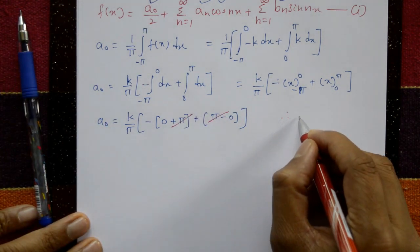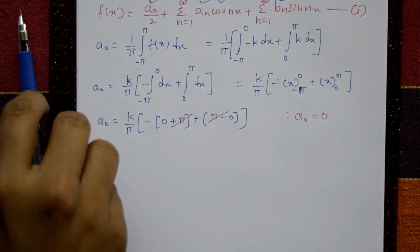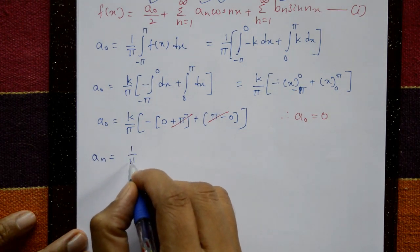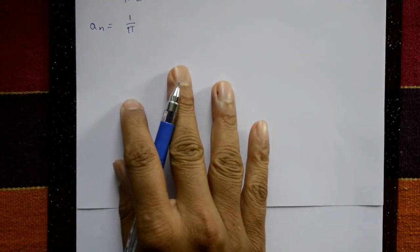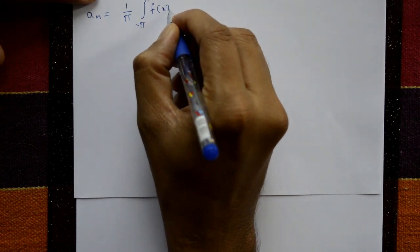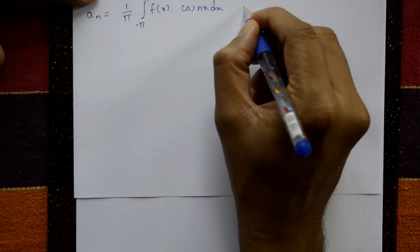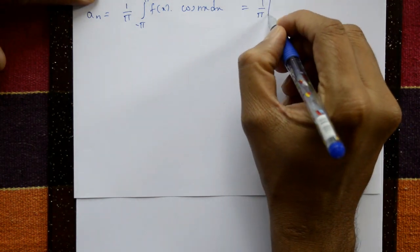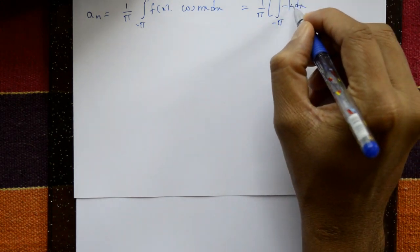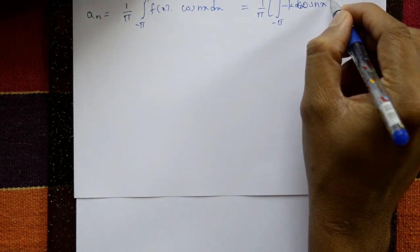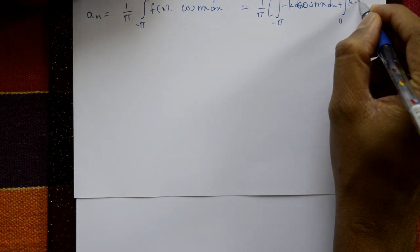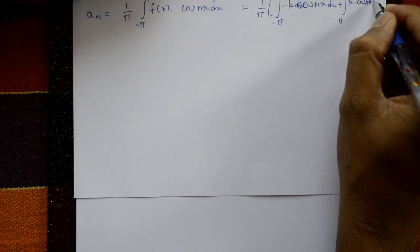Now go to aₙ. aₙ equals 1/π times the integral from minus π to plus π of f(x) cos(nx) dx. Since it is a discontinuous function, split: from minus π to 0 that is minus k into cos(nx) dx, plus from 0 to π, plus k into cos(nx) dx.